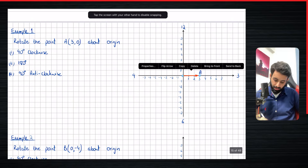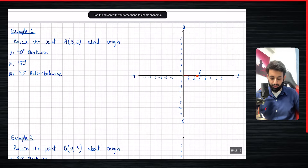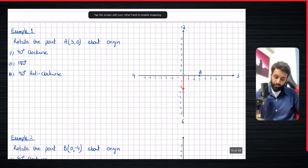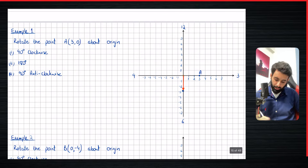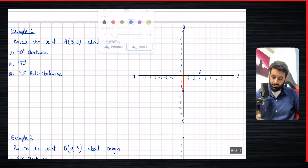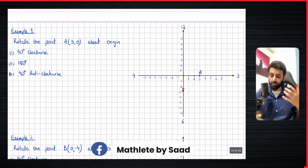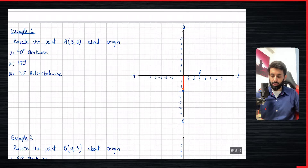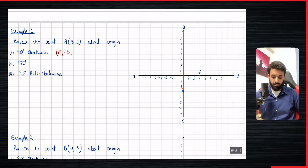We've already made this arrow. Rotating 90 degrees clockwise means: imagine the hour hand is at three — if you rotate it 90 degrees clockwise, it ends up at six. I suggest you first mark the point and then write down the coordinates — don't rush, or you will mess it up. The rotated coordinates are (0, −3).